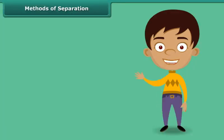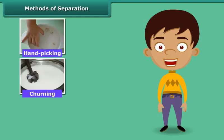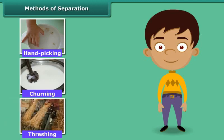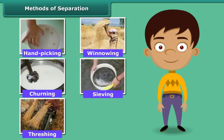You sure would have some idea about the methods of separation. In fact, you would have used some of these methods in your day-to-day life. Let us list some methods commonly used to separate the components of a mixture: hand-picking, churning, threshing, winnowing, and sieving. The basis for choosing a method of separation depends upon the physical properties of components.